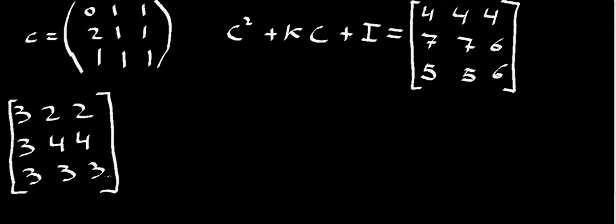At this point we have our C squared. The next term is k times C. As k is a number, when we multiply a number times a matrix, we get the number multiplying each term in the matrix. K times 0 is 0, so that element doesn't change. The other elements get multiplied by k: k, k on the first row, 2k, k, k on the second row, and 3k, 3k, 3k on the last row.